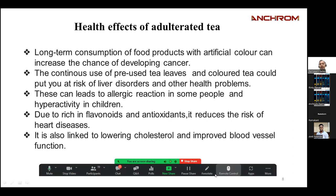Adulteration can also lead to allergic reactions in some people and hyperactivity disorders in children, with their sleep cycle getting disturbed. The positive effects of pure tea — due to being rich in flavonoids and antioxidants — include reducing the risk of heart disease, lowering cholesterol, and improving blood vessel function. If using adulterated tea, these are the adverse effects; if using non-adulterated tea, these are the positive effects.